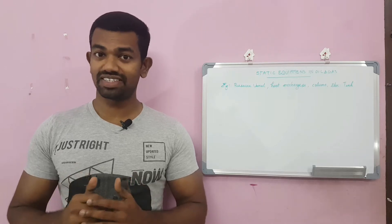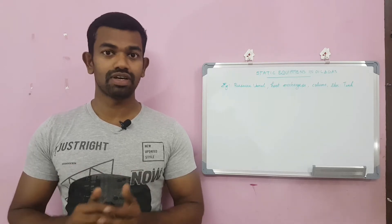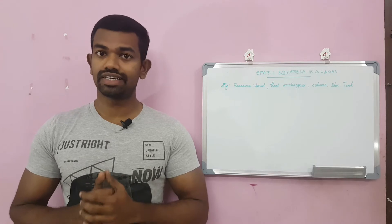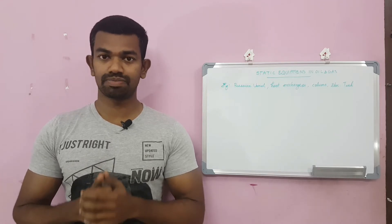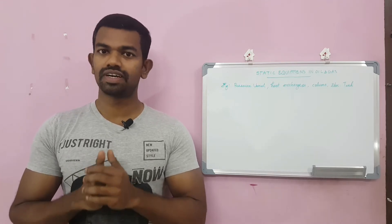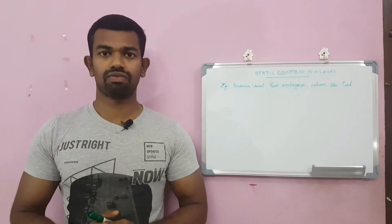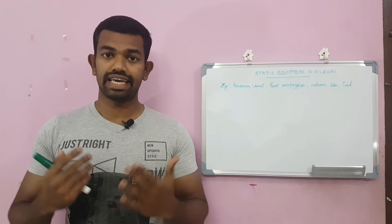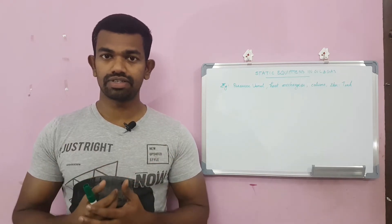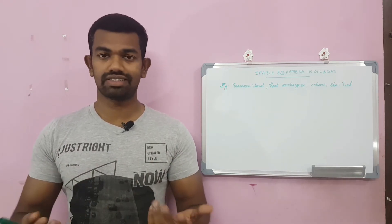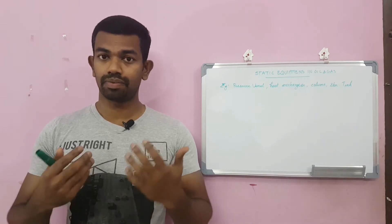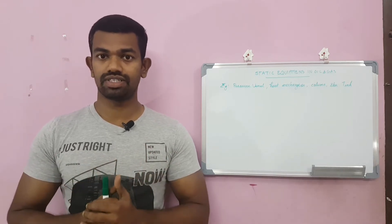Hi there, it is me Dhanesh. Today we are going to discuss what are the major static equipments in oil and gas petrochemical industry. Before that, what is a static equipment? A static equipment is equipment which contains fluids such as gas or liquids but doesn't have any rotating parts.